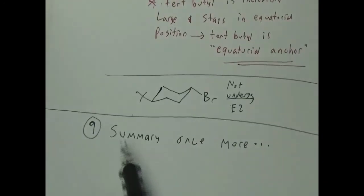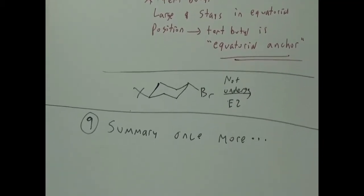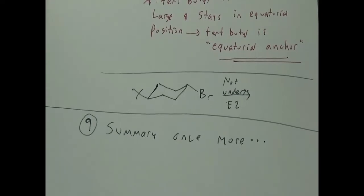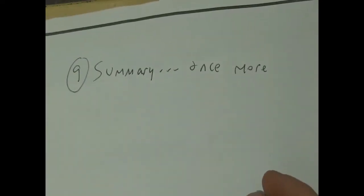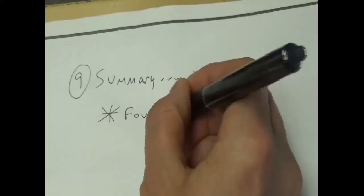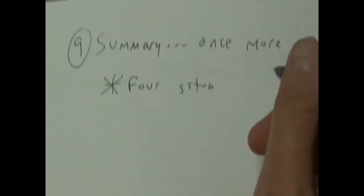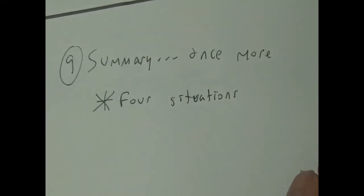Now we're at this summary section, which will summarize everything we've learned in terms of SN2, SN1, E2, and E1. Four situations we've encountered over the last two chapters. The first is: weakly basic, good nucleophile. This is usually going to give you an SN2 reaction — this is really chapter 6 material.